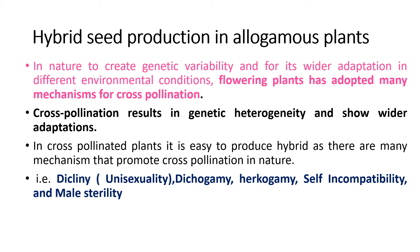Mechanisms promoting cross-pollination: number one is dicliny, that is unisexuality. Dichogamy, that is different timing of pollination — pollination also by bees, where there is some barrier due to which male and female parts cannot meet or pollen cannot stick to the stigma directly, requiring vectors. Self-incompatibility — if plants mature at different times, there may be self-incompatibility. And male sterility — when the male part is dysfunctional. All these things support hybrid seed production.